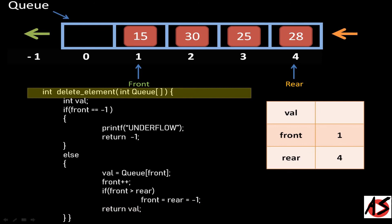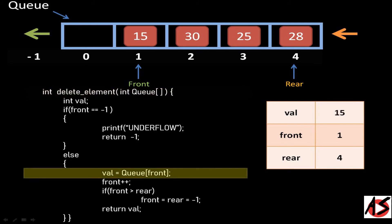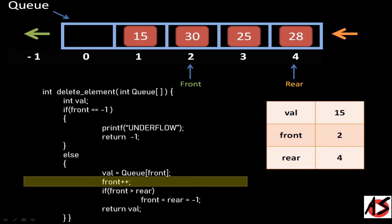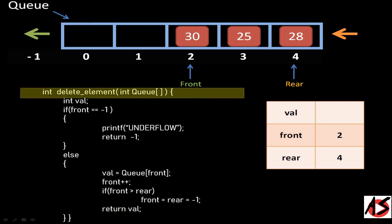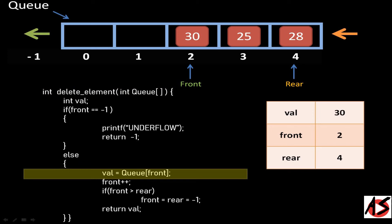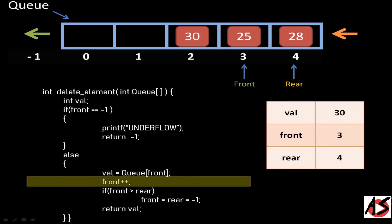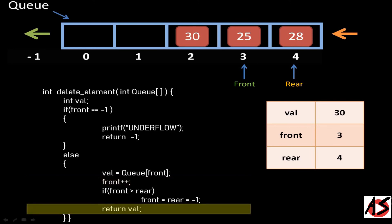Now we want to delete more elements from the Queue. As the first condition is false, control moves to the else part and the element at the first index is copied into the val variable. The front is incremented by 1 to 2. Since front greater than rear is false, the function returns and element 15 is deleted from the Queue. We want to delete one more element; again the first condition is false, control moves to the else part and the element at the second index is copied into val. The front is incremented by 1 to 3. Since front greater than rear is false, the function returns and element 30 is deleted from the Queue.